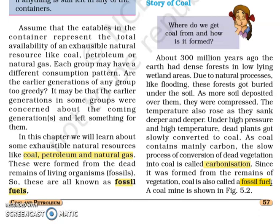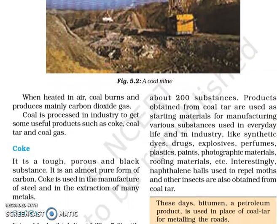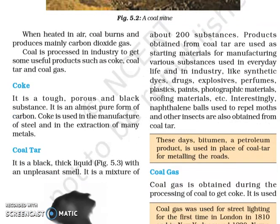As coal contains mainly carbon, the slow process of conversion of dead vegetation into coal is called carbonization. Since it was formed from the remains of vegetation, coal is also called a fossil fuel. So coal is mainly formed from dead plants. When heated in air, coal burns and produces mainly carbon dioxide. Coal is processed in industry to get some useful products such as coke, coal tar and coal gas.